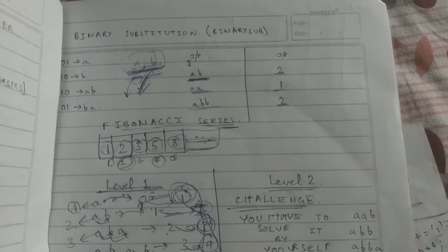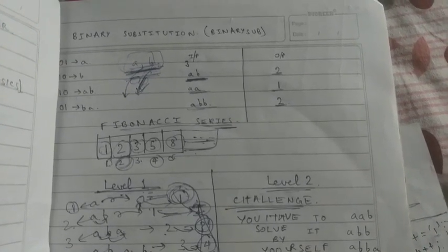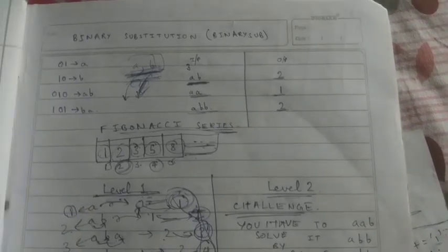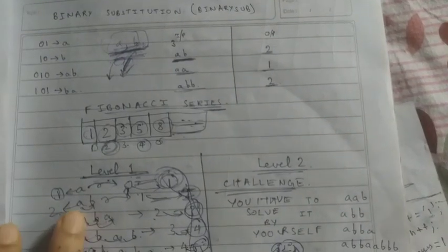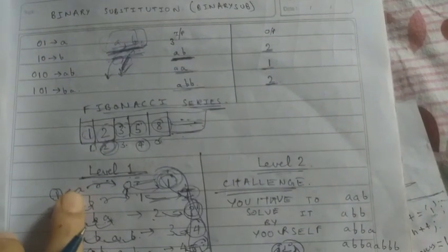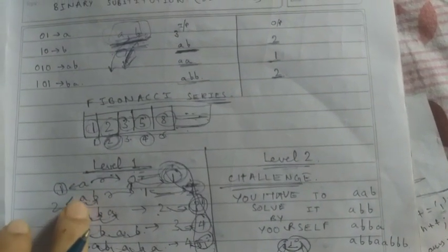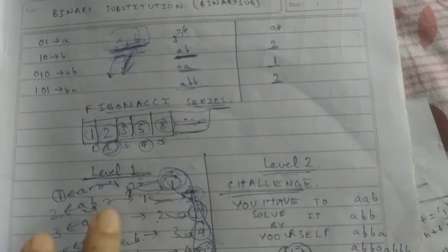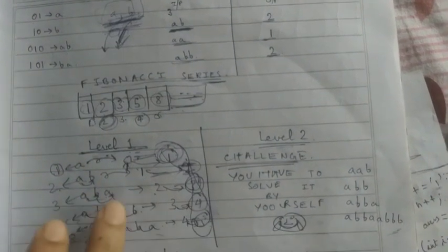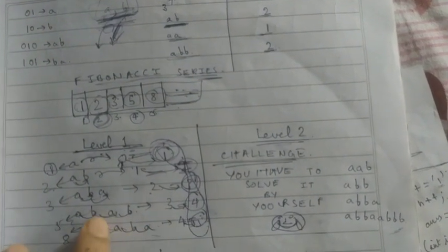In the previous video, I discussed the solution of the binary substitution — level one of the solution. That is if the elements are alternatively changed, that is A, B, A, B, A, B, A, B, A, B, A, B, A.